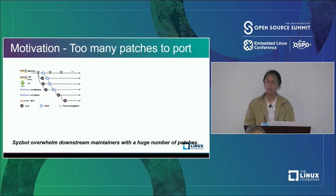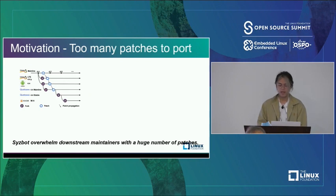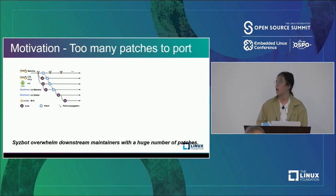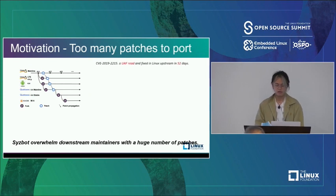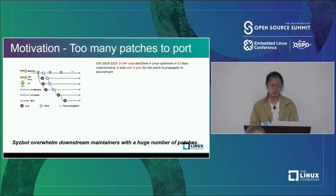The second motivation is there are too many patches to port. The mainline is the upstream kernel, and downstream kernels like Android, Ubuntu, and Fedora fork a long-term support version and create their own distributions. Patches applied to the long-term support version also apply to their distributions. Sometimes distributions cherry-pick patches from upstream directly. However, patch propagation is slow and inefficient — maintainers may not know which patches are urgent. For example, CVE-2019-2215 was initially reported by SysBot as a UAF read, fixed in Linux upstream in 52 days, but it took over a year for the patch to propagate to the downstream Android kernel because it lacked clear documentation of its security impact.